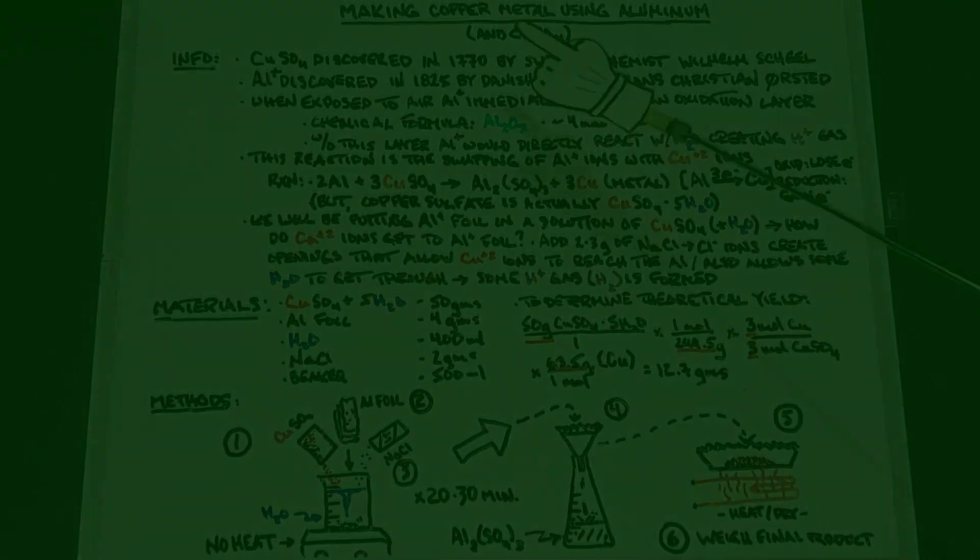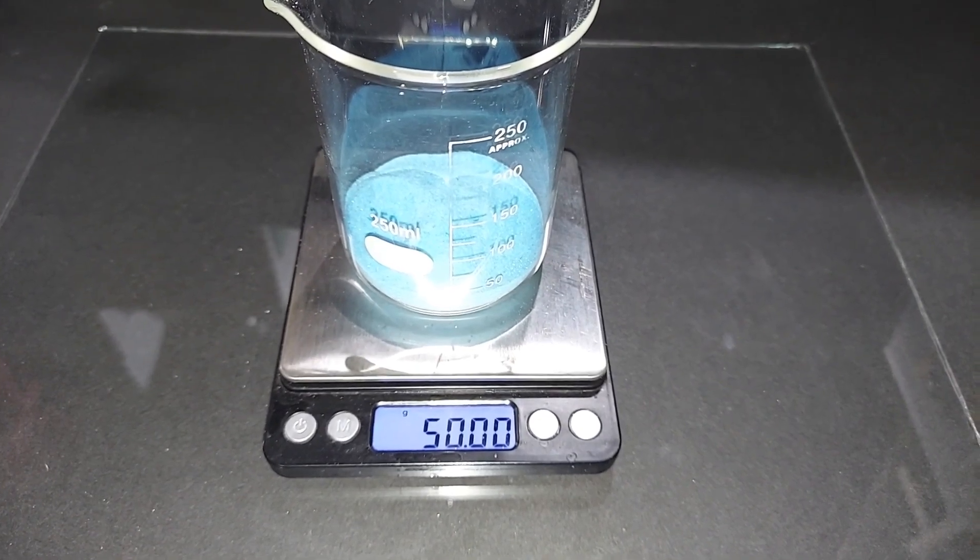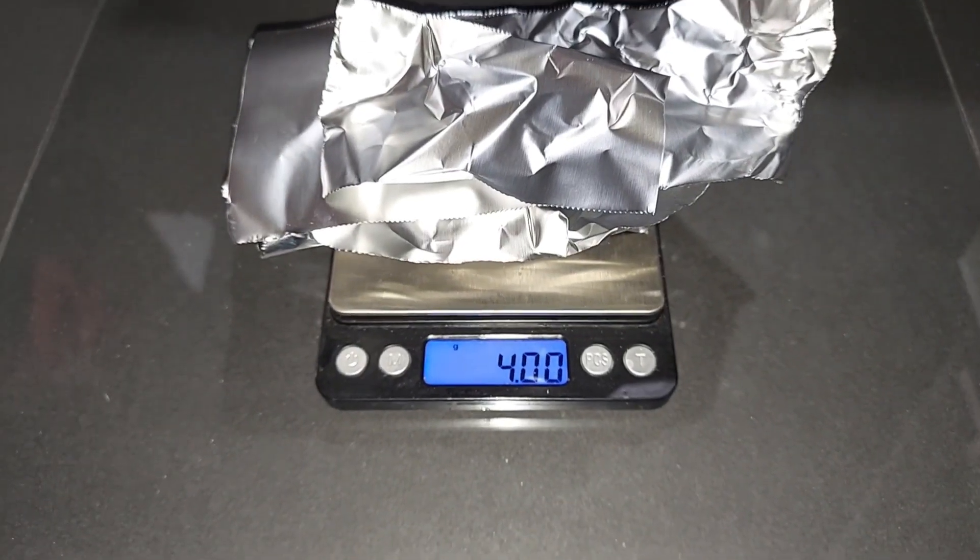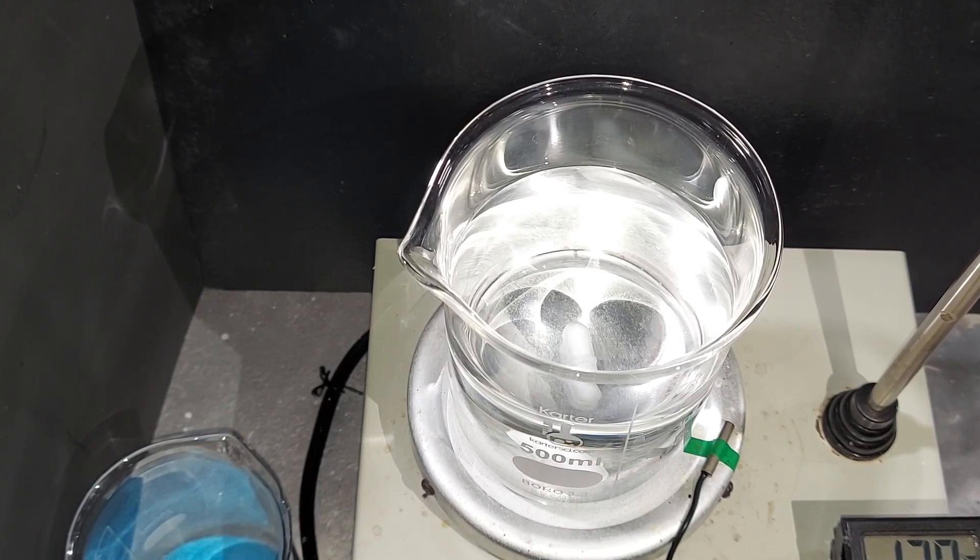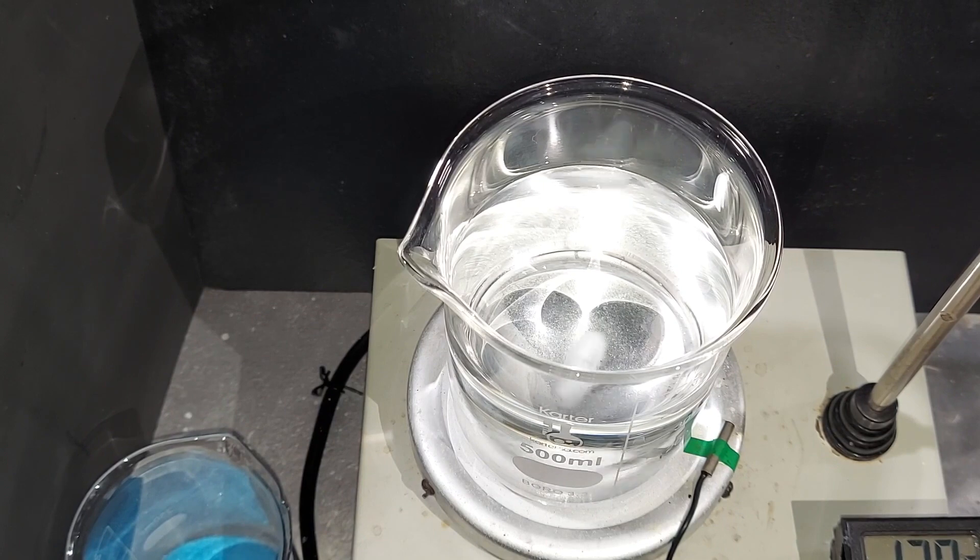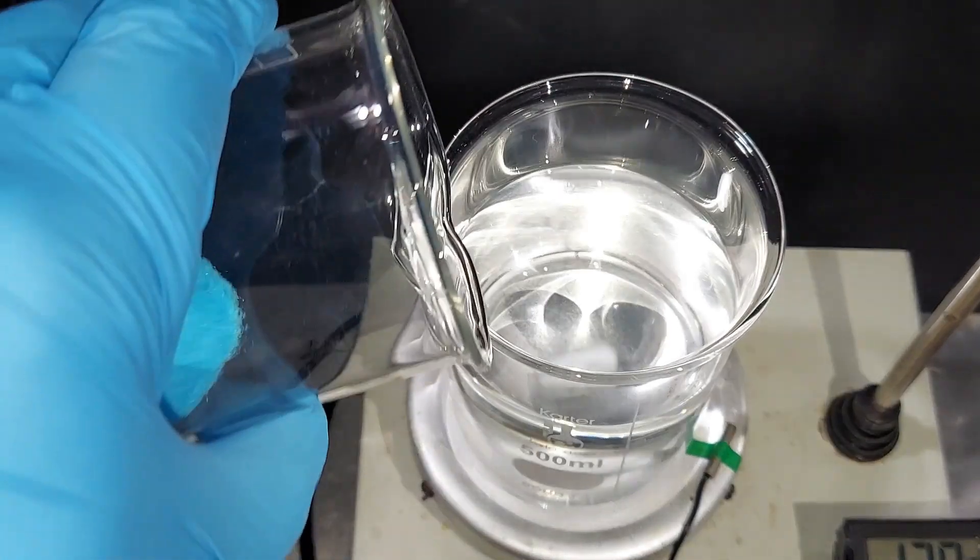50 grams of copper sulfate pentahydrate pre-weighed, four grams of aluminum foil pre-weighed. I put 400 milliliters of distilled water in this 500 milliliter beaker. I'm going to turn on the stirring and keep it pretty slow. I've got my 50 grams of copper sulfate pentahydrate right here and I'm going to slowly add this.